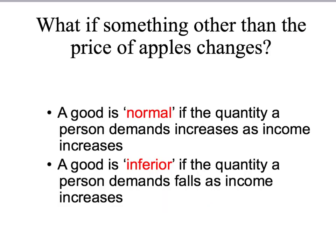We can also ask what happens to Jackie's demand curve when her income changes. Suppose Jackie gets a new part-time job and now earns $200 a week instead of $120. A good is a normal good if the quantity demanded increases as income increases. A good is an inferior good if the quantity demanded falls as income increases. Examples of normal goods: scotch fillet, meals at expensive restaurants, good cars. Examples of inferior goods: cheap takeaway food, second-hand clothes — things you buy less of as you get richer.